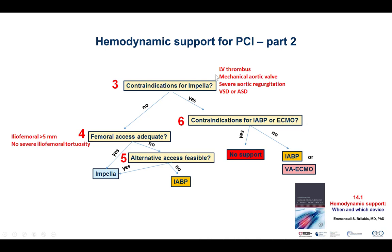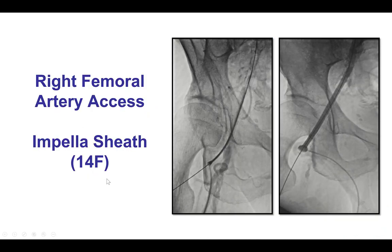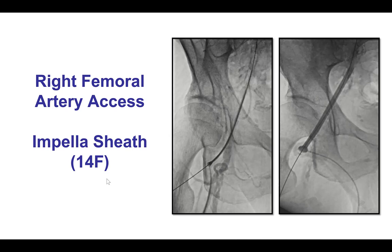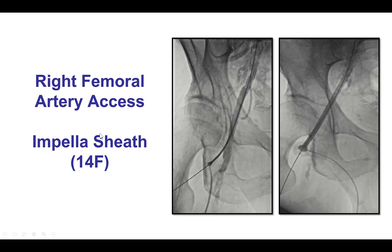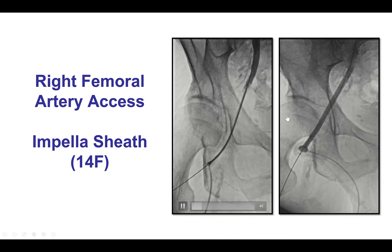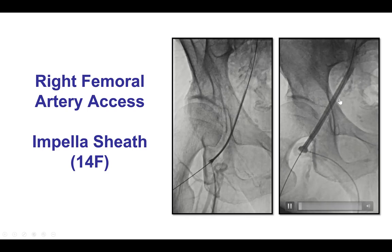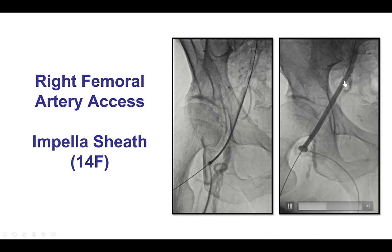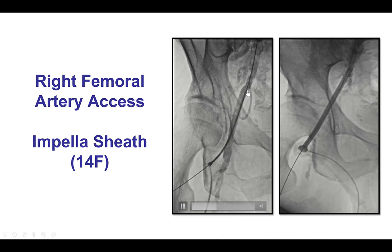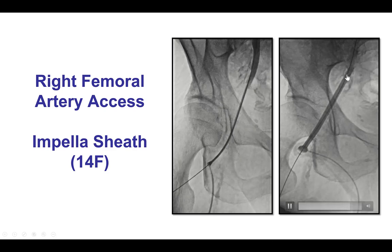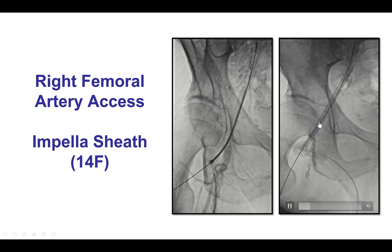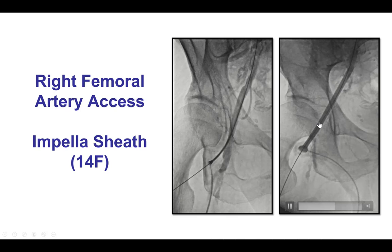In our patient, there were no contraindications, and femoral access appeared to be adequate on the previous angiogram. Therefore, Impella was chosen for hemodynamic support. We obtained right femoral artery access and inserted the Impella sheath, and then we noticed that there was poor antegrade flow after the Impella sheath was inserted, which is something that can happen even though the artery appears to be okay. Sometimes there can be occlusion of flow due to the large size of the Impella sheath.